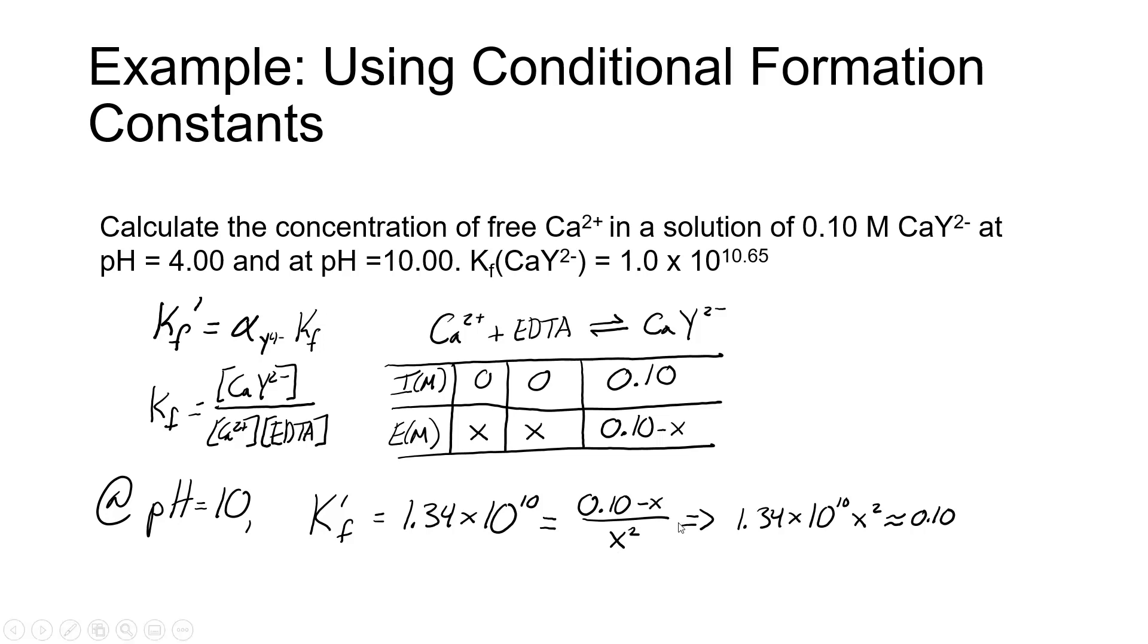You could do it explicitly with quadratic equation. One thing that you can almost always do in an EDTA conditional formation constant calculation is that because the conditional formation constant is generally so large, you can make the assumption that X is very small compared to the concentration of CAY2 minus that remains undissociated. And so we can simplify our numerator from 0.10 minus X to just 0.1. In general, this is a much better assumption at pHs above 6 than it is at pHs less than 5, but to make our life easier, we'll assume that in both cases. It's a great assumption in basic pHs, it's only an okay-ish assumption at acidic pHs.